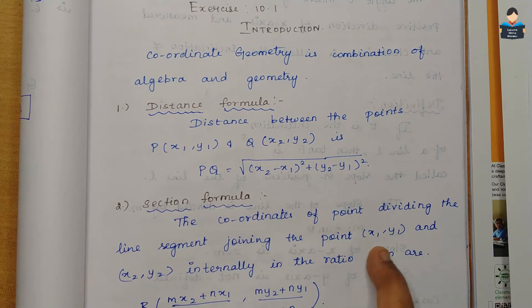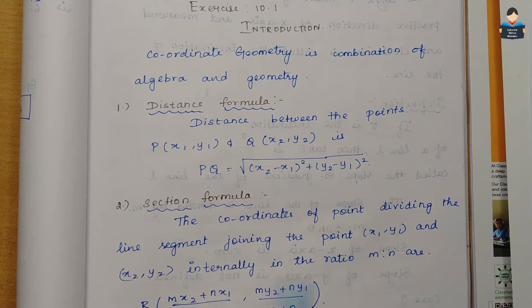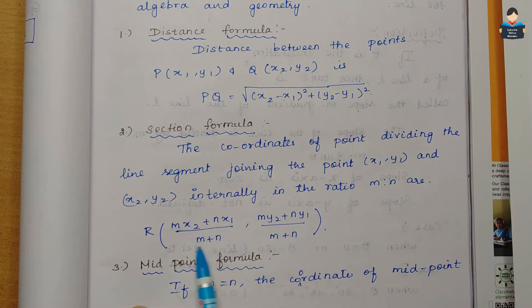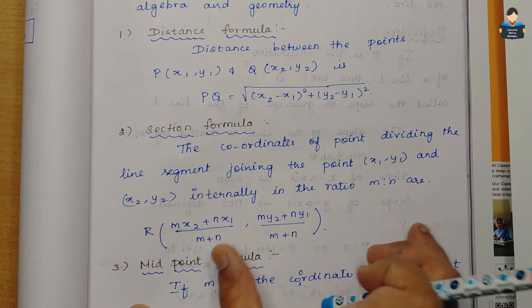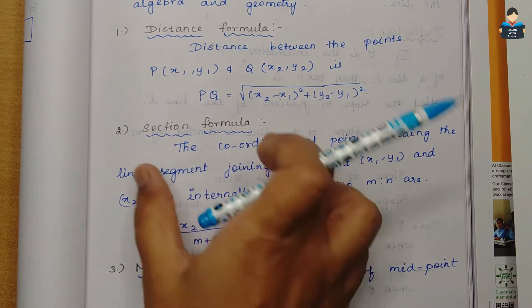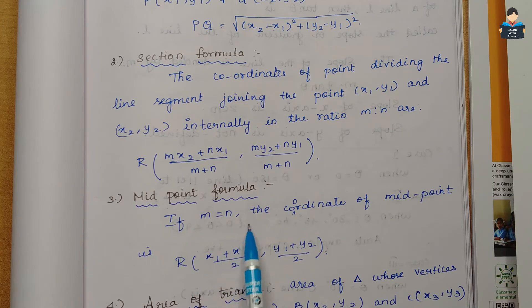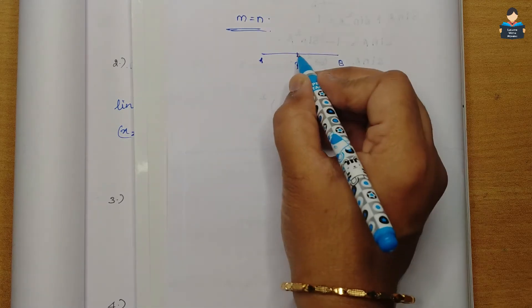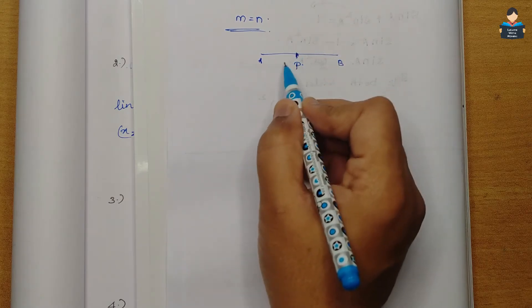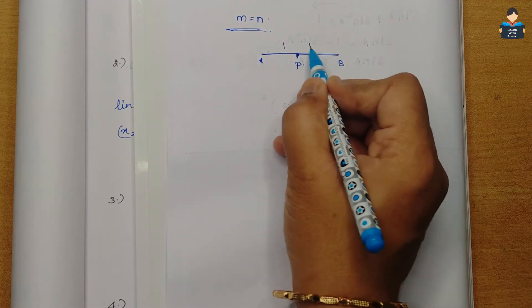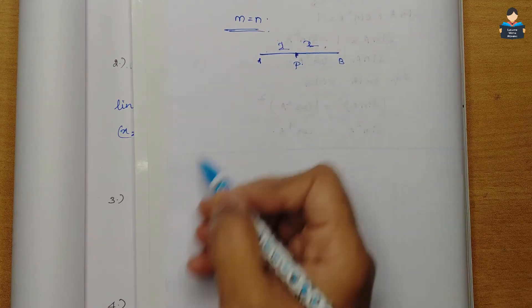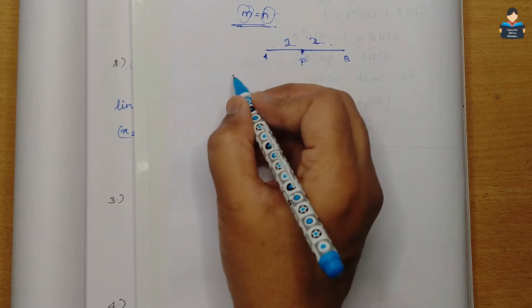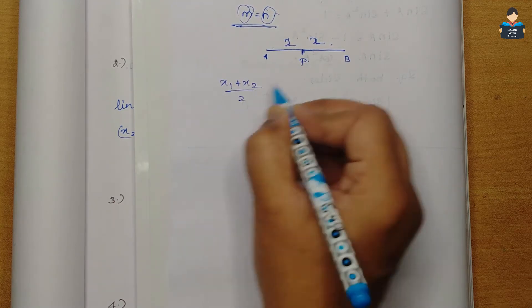Next is the Section Formula. The section formula gives the coordinates of a point that divides a line segment in a given ratio m to n. And the Midpoint Formula is a special case of the section formula where m and n values are the same, giving the midpoint of line segment AB.